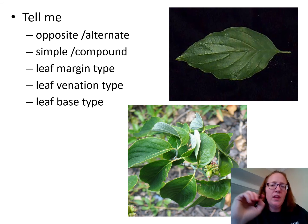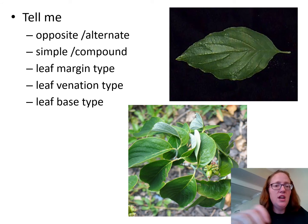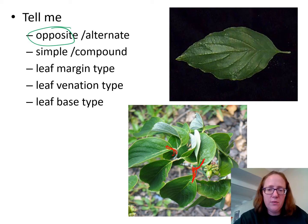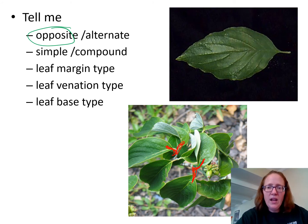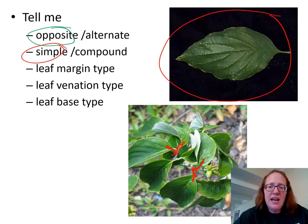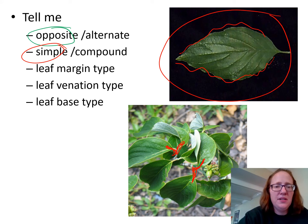This next one is dogwood. Is it opposite or alternate? Since it's a dogwood — one of the MAD trees — you can correctly guess it is opposite. Looking at the picture, you can also see leaves coming off the branch right next to each other, confirming it is opposite. This right here is one leaf, so we know it's simple. The margin type in this picture looks pretty wavy, so we can say entire or wavy — it's wavy.